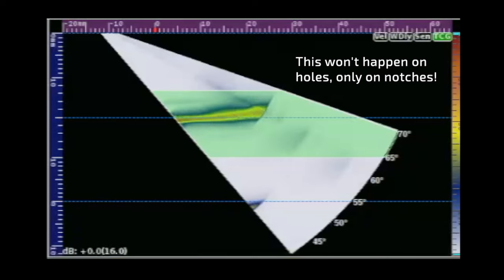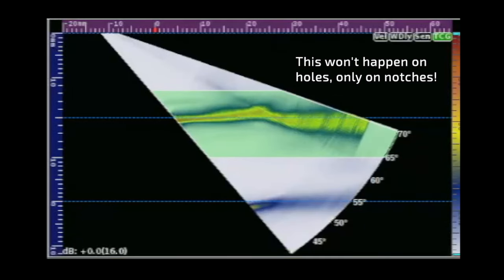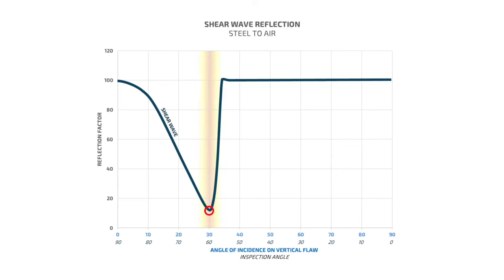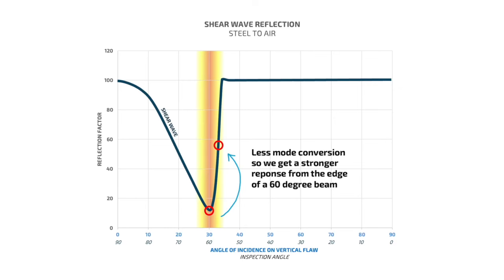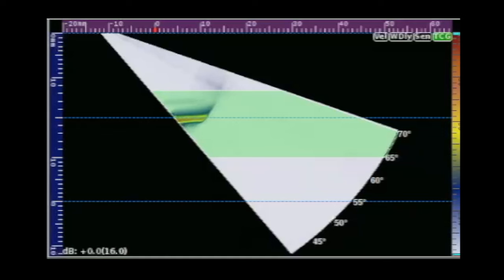Secondly, that little bend in the echodynamic is really interesting. At the lower angles we're basically getting a response from the corner trap. If I draw a gradient up the middle of the chart to approximate the width of a 60-degree beam, even though the outskirts of the beam are weaker than the middle, they don't mode convert as much. So the angles off 60 actually produce a stronger shear wave reflection.